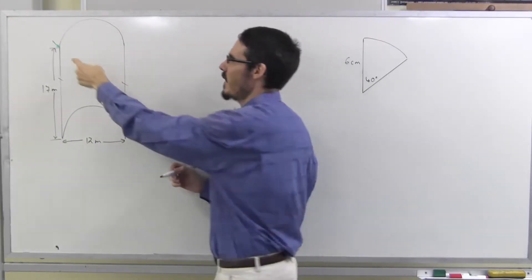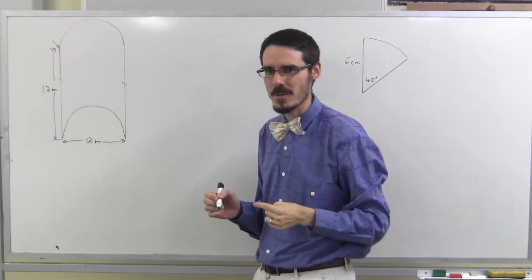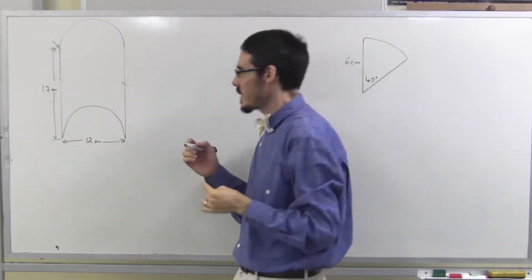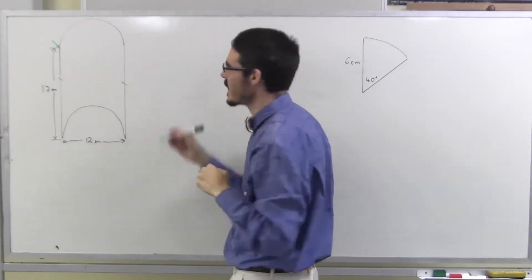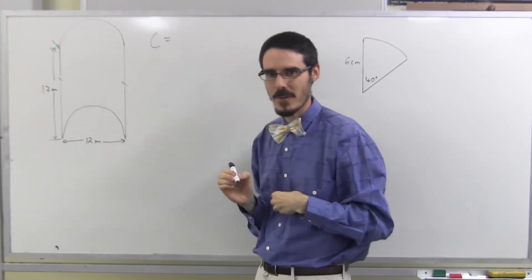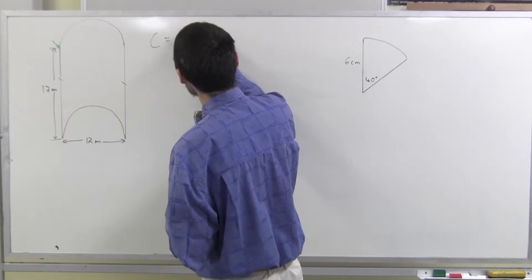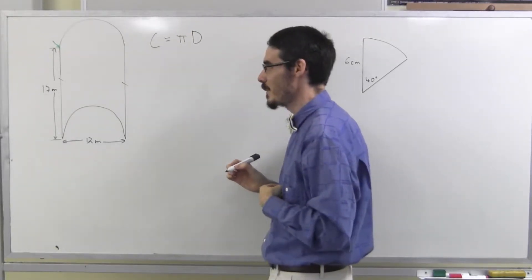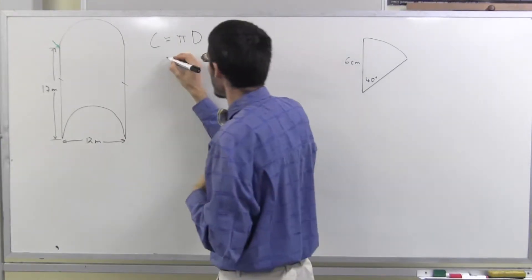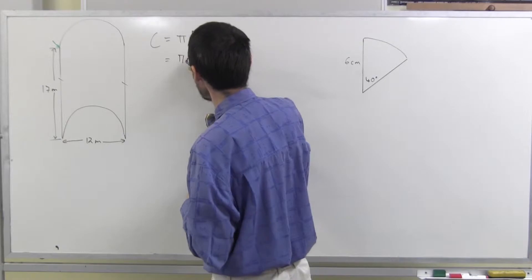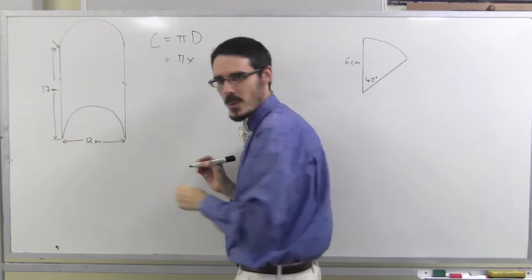So actually, if I have half a circle here and half a circle here, I actually have a whole circle, don't I? So, let's work out first how far that circular bit is. If it's a circle, I need the circumference of the circle, and the circumference of the circle is pi times the diameter. It's pi times, well what's the diameter of that circle? It's 12 metres.